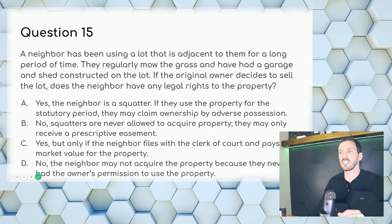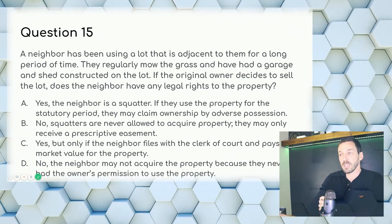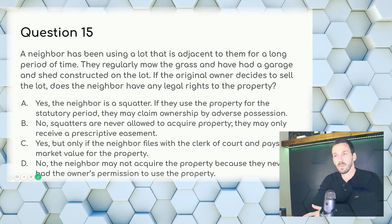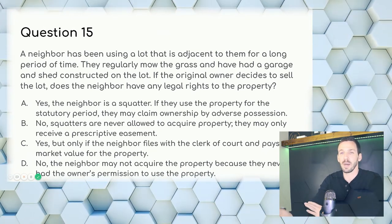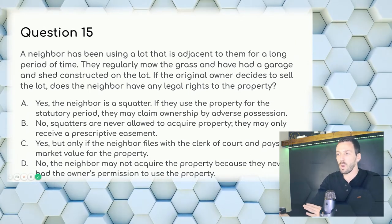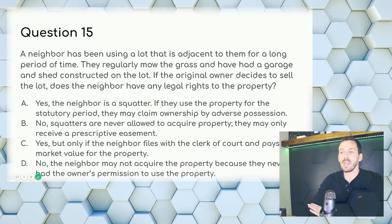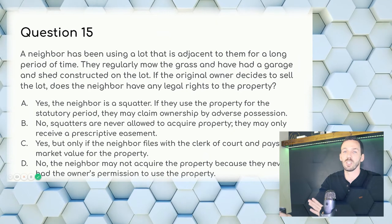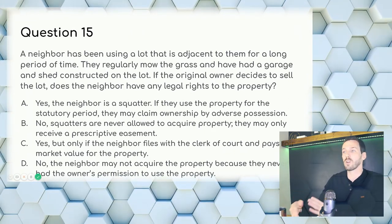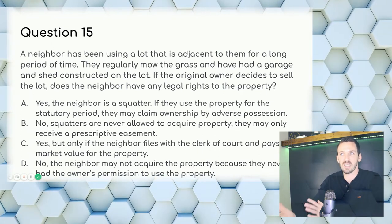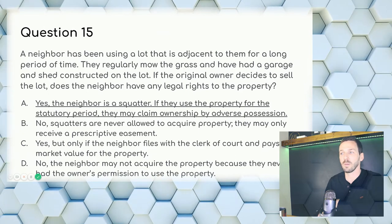Question 15: A neighbor has been mowing and building structures on an adjacent lot for a long period. If the original owner decides to sell, does the neighbor have any legal rights? Remember the acronym OCEAN — Open, Continuous, Exclusive, Adverse, and Notorious. The neighbor is openly mowing continuously and has structures on the lot. Answer: A — the neighbor is a squatter, but if they use the property for the statutory period, they may claim ownership by adverse possession.